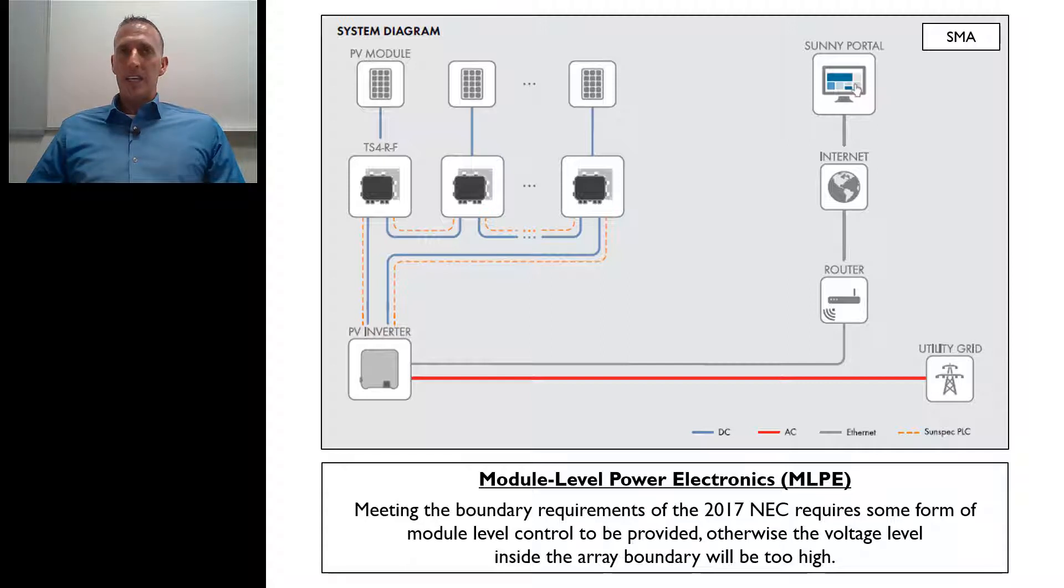The 2014 NEC allowed much higher voltage levels within the array boundary. The big change came when we went to 2017, and it said, hey, doesn't matter what your voltage level when the system's operating, within that array boundary, when the rapid shutdown is initiated, you've got to get down to 80 volts or less within 30 seconds.